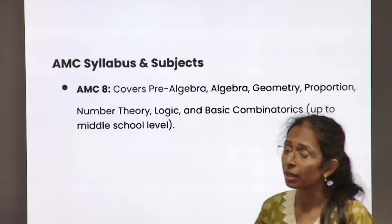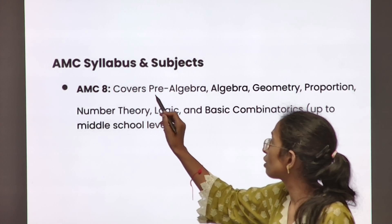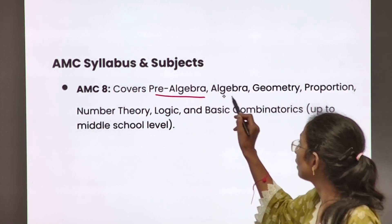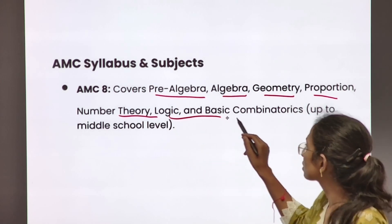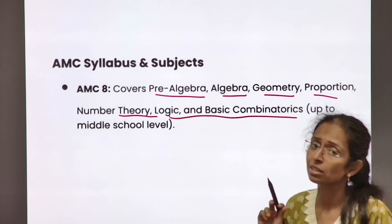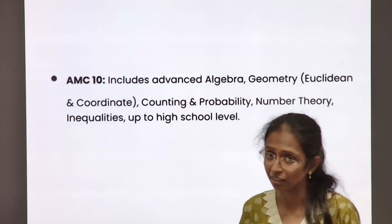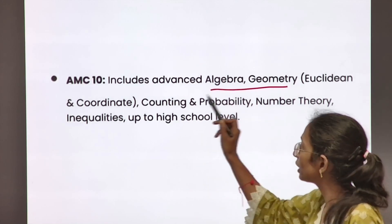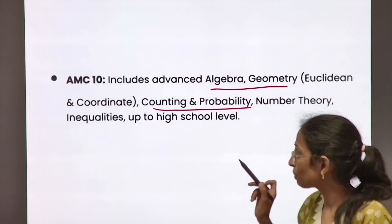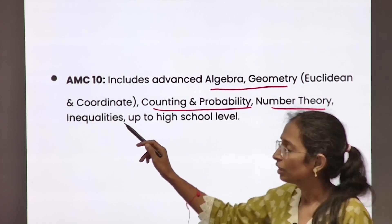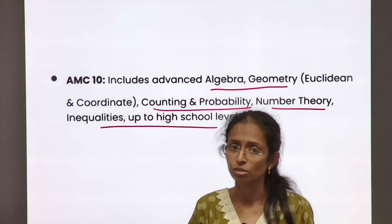The syllabus for AMC: For AMC 8, it consists of pre-algebra, algebra, geometry, proportion, number theory, logic, and basic combinatorics. For AMC 10, it includes algebra, geometry, counting and probability, combinatorics, number theory, and inequalities up to the high school level.